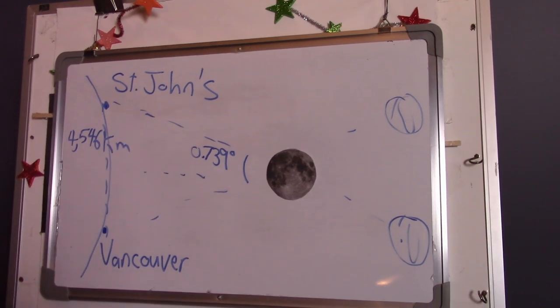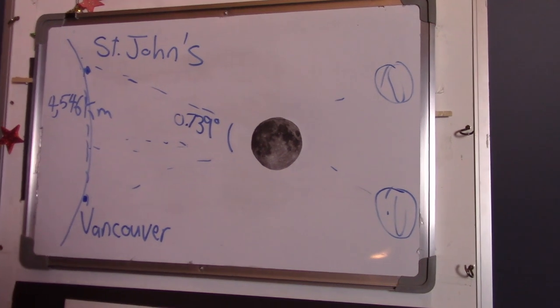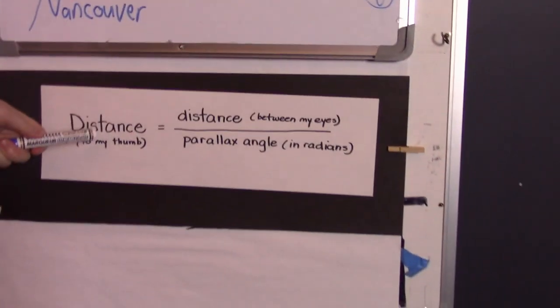And I can take these two numbers and find the distance from the Earth to the Moon using the same formula.